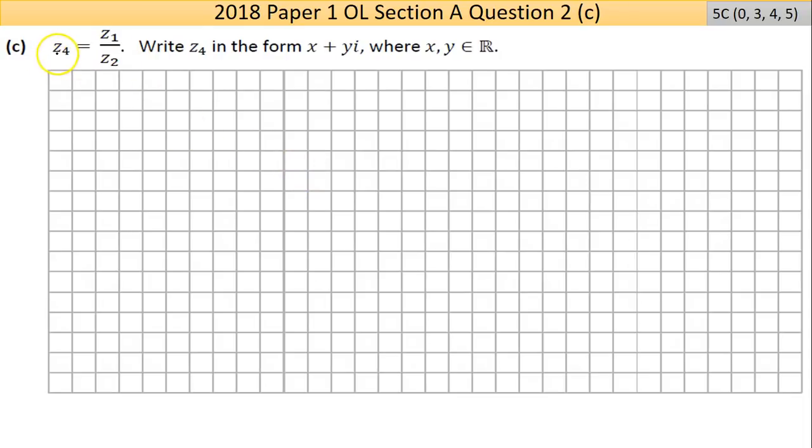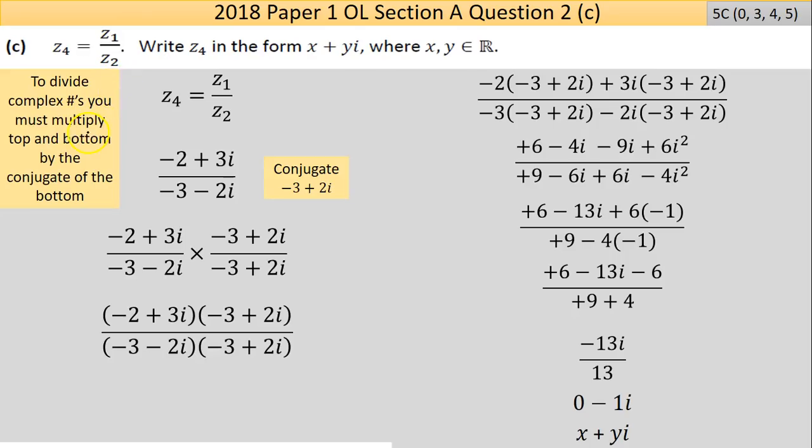Now part C: you're given that a fourth complex number Z4 can be found by dividing Z1 by Z2. That line here always means the divider line. It says write Z4 in the form of x + yi. Now it's tricky in this question, but we'll come to it later. You'd ignore this - it's just saying the x and y are real numbers, it's just kind of mathematically covering the correct terminology. Your answer often will appear in this form anyway. There's a trick that sometimes happens here that I'll go through later on. The method for dividing complex numbers is to divide complex numbers, you must multiply top and bottom by the conjugate of the bottom.